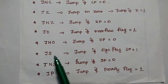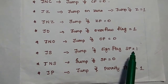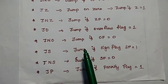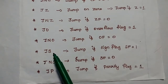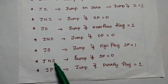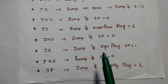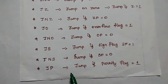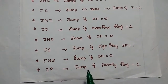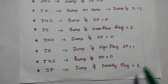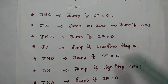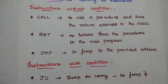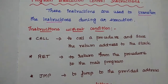JS — Jump if Sign flag is set (program execution transfers to the new location). JNS — Jump on Sign flag equal to 0. JP — Jump if Parity flag is equal to 1. These are all the Program Execution Control Instructions.